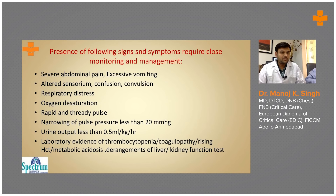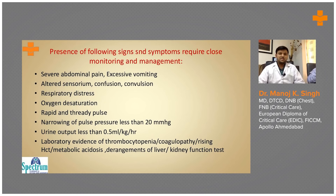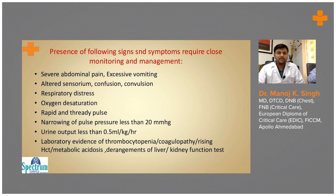Additional warning signs include rapid and thready pulse, narrowing of pulse pressure less than 20 mmHg, urine output less than 0.5 ml per kg per hour, and laboratory evidence of thrombocytopenia, coagulopathy, rising hematocrit, metabolic acidosis, and derangement of liver and kidney function due to hypoperfusion.